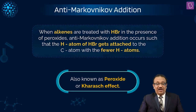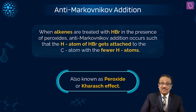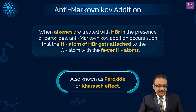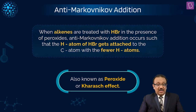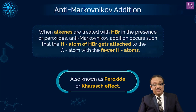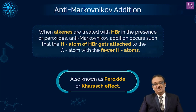Anti-Markovnikov Addition. When alkenes are treated with HBR in the presence of peroxides, Anti-Markovnikov Addition occurs, such that the hydrogen atom of HBR gets attached to that carbon which contains the lesser number of hydrogen atoms.